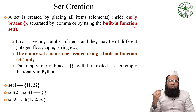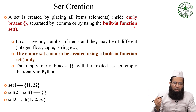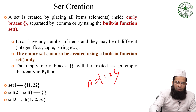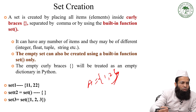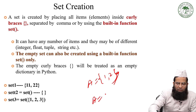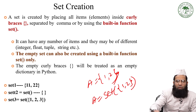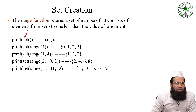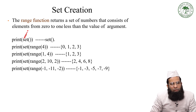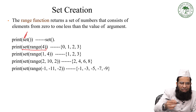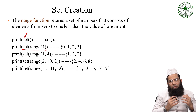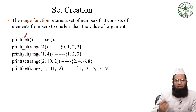How to create a set? A set is created by placing all items inside curly braces. You can also use the set() function to create a set, for example: set([1, 2]). You can also use the set() function with the range() function to create a set, similar to how we used range() with lists and tuples.